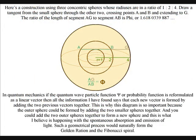In this diagram, we have three concentric spheres whose radii are in a ratio of 1:2:4. If we draw a tangent line from the small sphere through the other two, crossing points A and B and extending to G, the ratio of the length of segment AG to segment AB is the golden ratio.